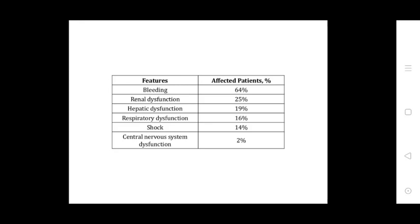In affected patients: bleeding occurs in 64%, renal dysfunction in 25%, hepatic dysfunction in 19%, respiratory dysfunction in 16%, stroke in 14%, and central nervous system involvement in the brain in 2%.